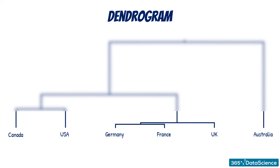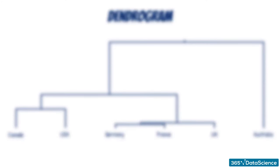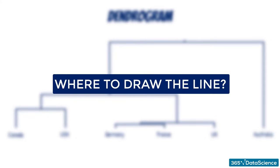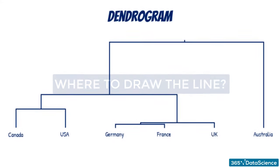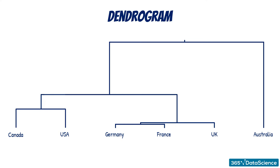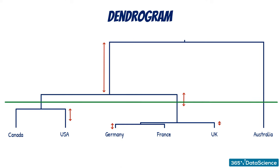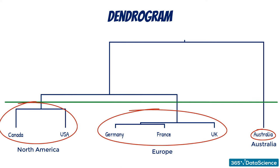How should we decide where to draw the line? Well, there is no specific rule, but after solving several problems, you kind of develop an intuition. When the distance between two stages is too big, it is probably a good idea to stop there. For our case, I would draw the line at three clusters and remain with North America, Europe, and Australia.